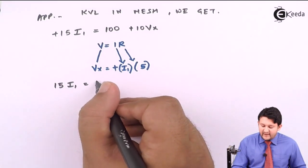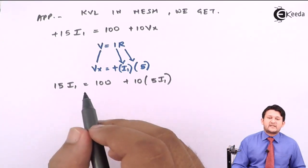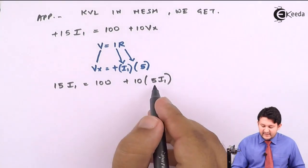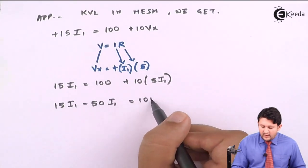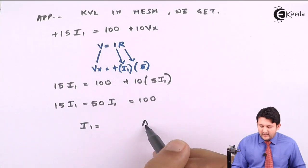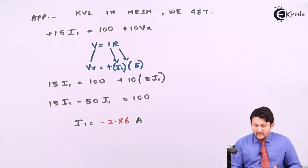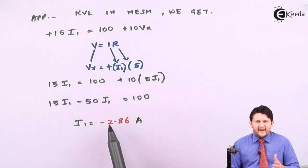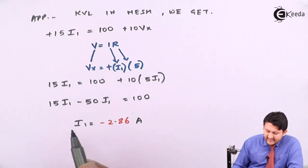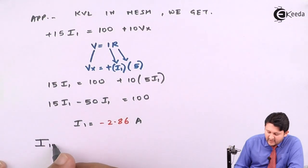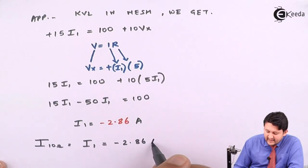Rearranging — all variables to the left, numbers to the right: 15I1 − 50I1 = 100, giving −35I1 = 100. Using a scientific calculator, I1 = −2.86A. The current across 10Ω in Case 1 equals I1 = −2.86 amperes.